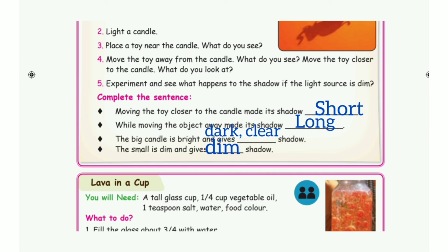Take page number 132. Complete the sentence. 1st one: moving the toy closer to the candle made its shadow short. 2nd one: moving the object away made its shadow long. 3rd one: the big candle is bright and gives a dark and clear shadow. 4th one: the small candle is dim and gives a dim shadow.